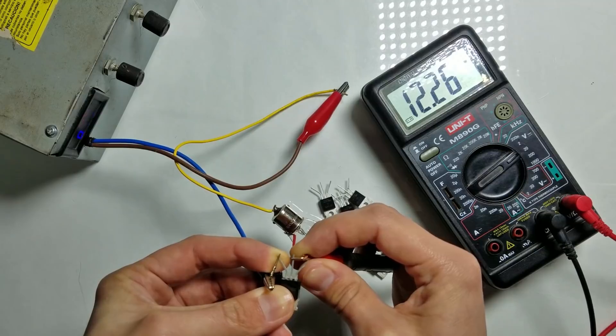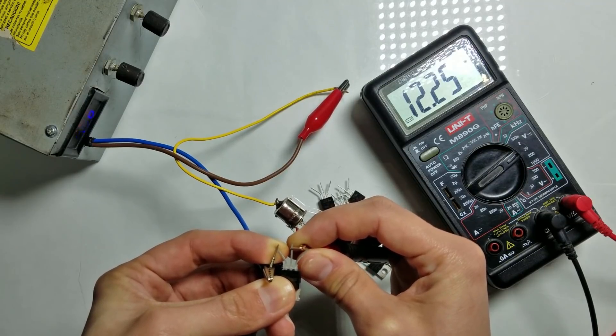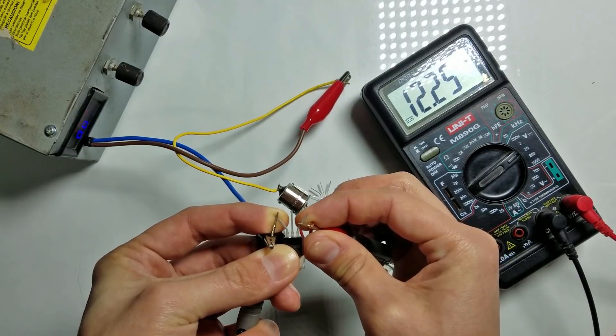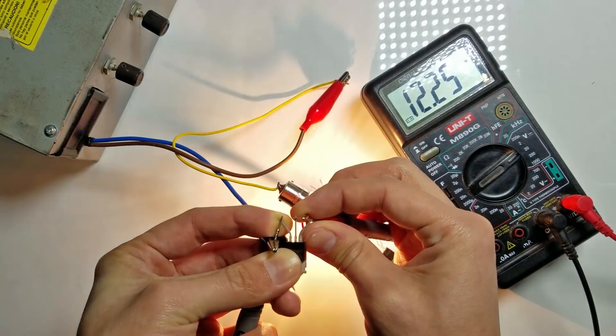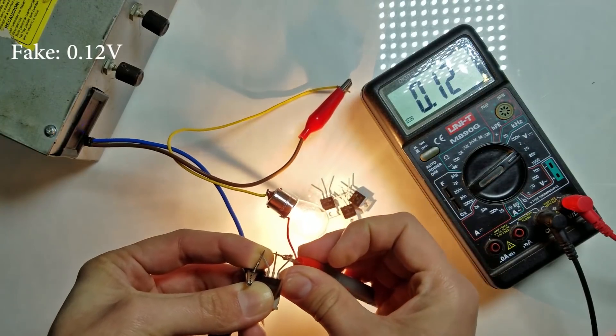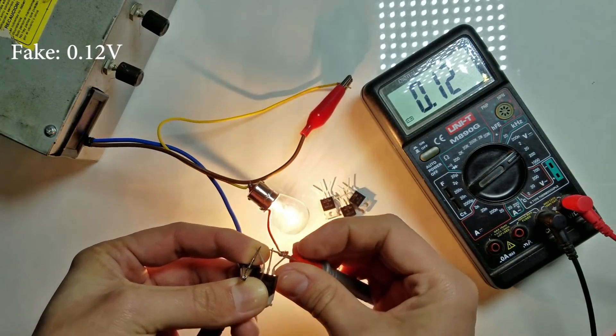First we need to connect probes to drain and source leads. And nothing happens. Well, that is because the MOSFET is off. We need to touch the gate lead in order to turn it on. And now we have our first measurements, 0.12V.